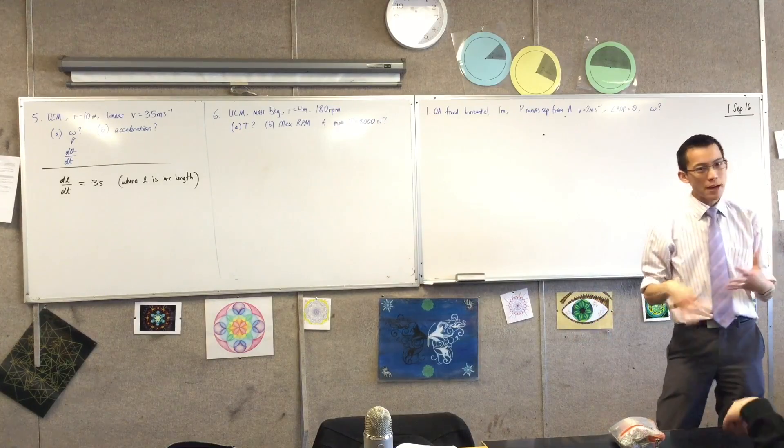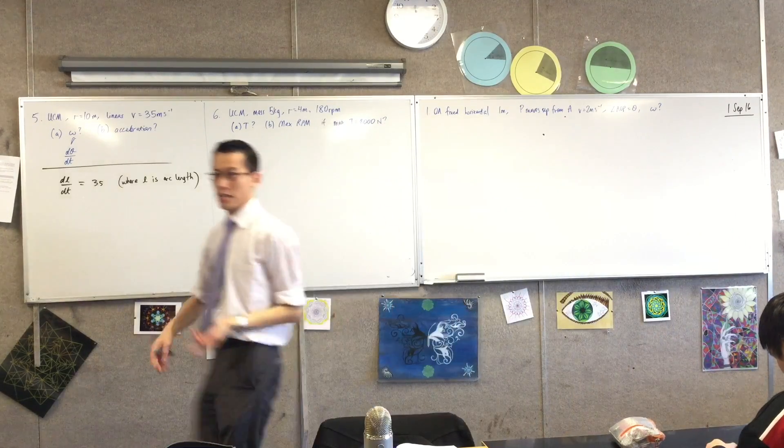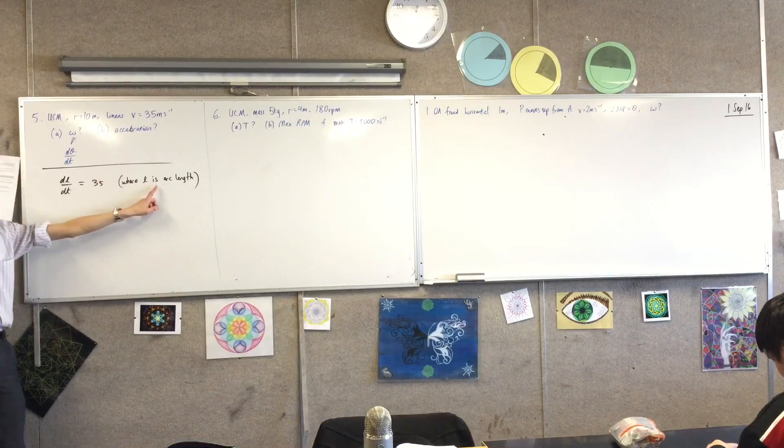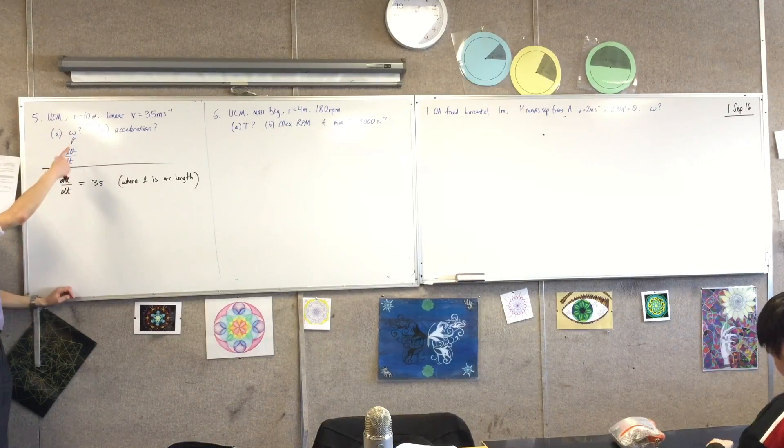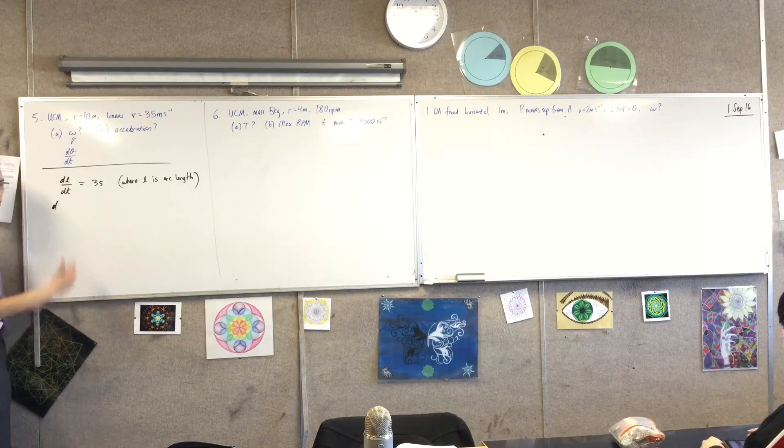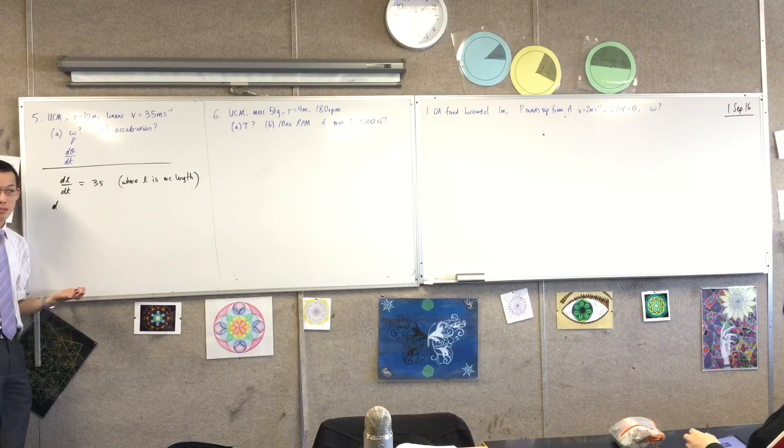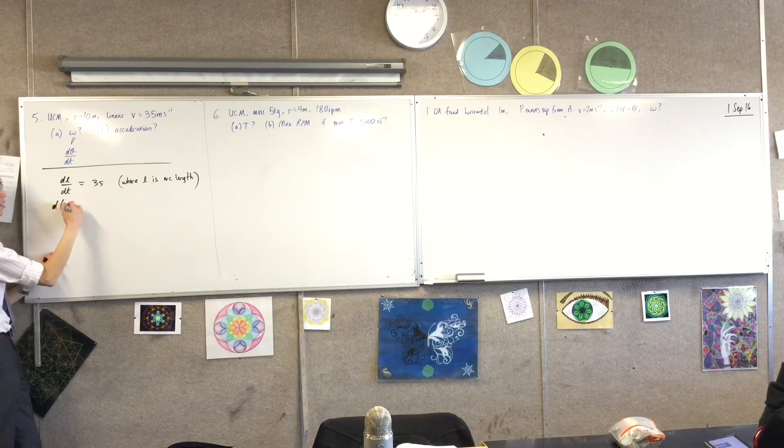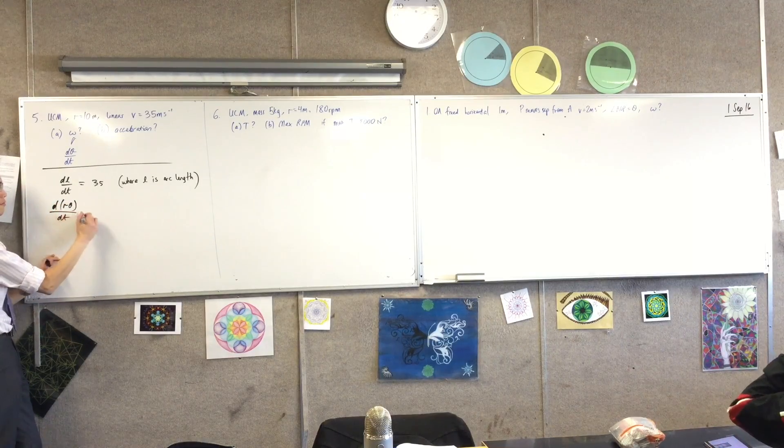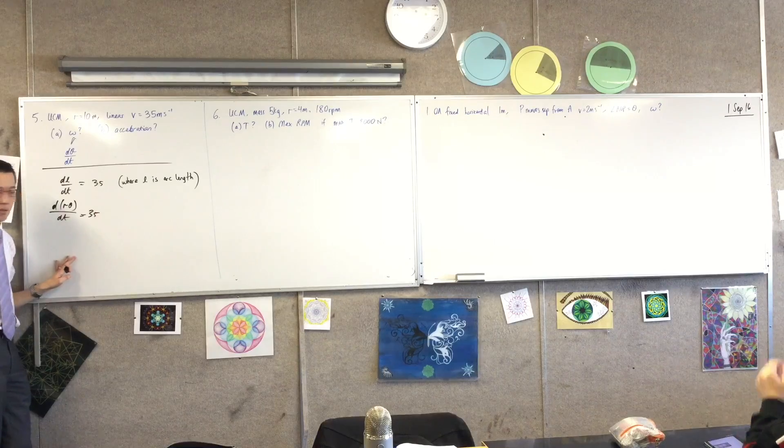Now the wonderful thing about using l, rather than x or whatever, is because remembering that it's arc length, I can connect it back to theta very easily. Right? Because based on radiant measure, l of course is r theta. Very good. r theta. Like so. Right?